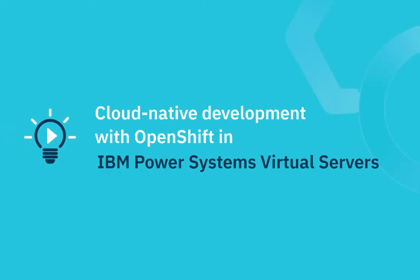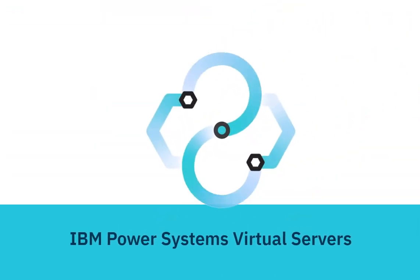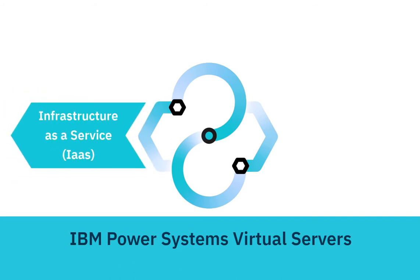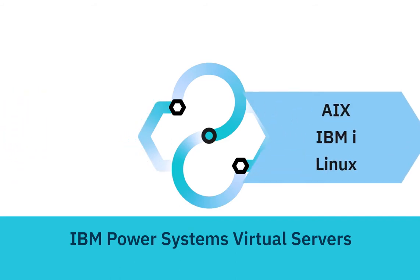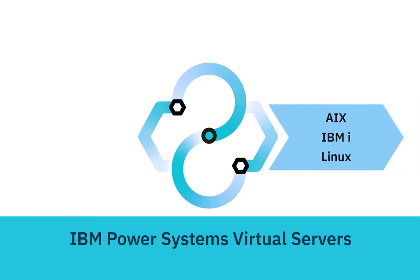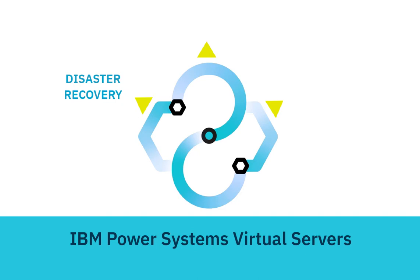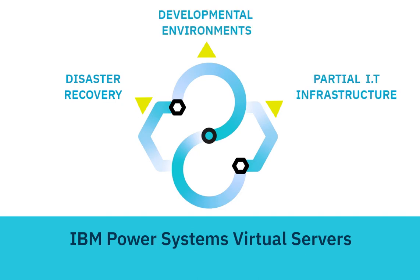Discover cloud-native development with OpenShift in IBM Power Systems Virtual Servers. The Power Systems Virtual Servers are a form of infrastructure as a service for clients who are running either the AIX, IBM I, or Linux operating systems. The Power Systems Virtual Servers can quickly create and deploy one or more virtual servers, and can support several workload scenarios, including disaster recovery, development environments, and partial IT infrastructure moves.